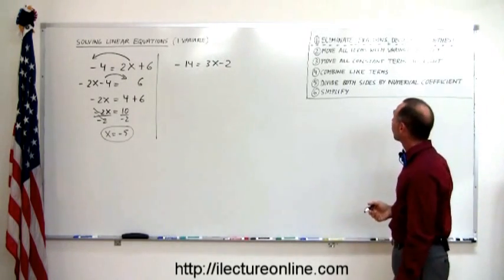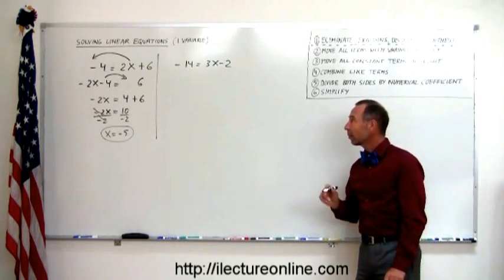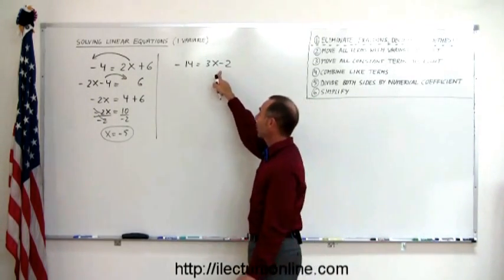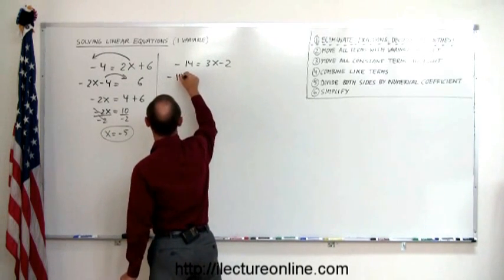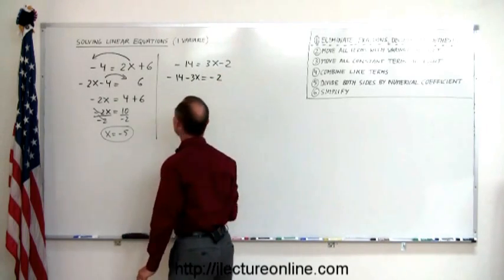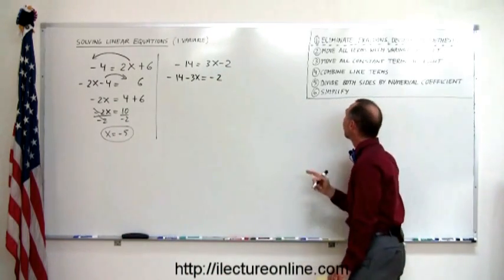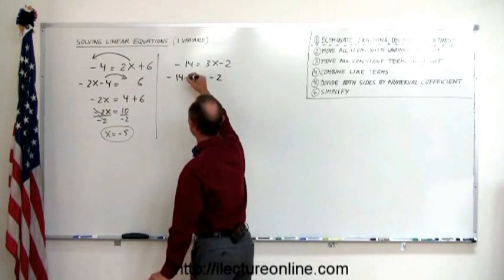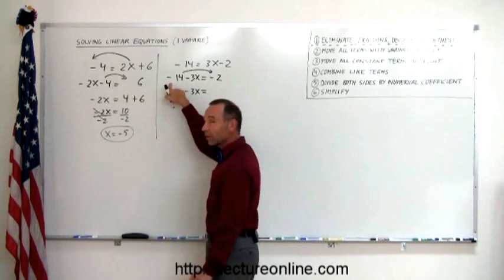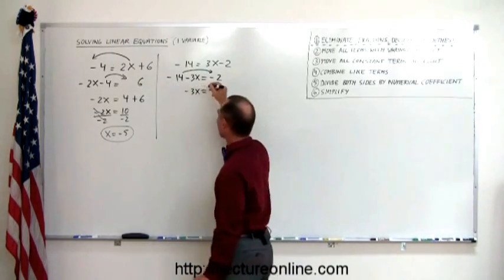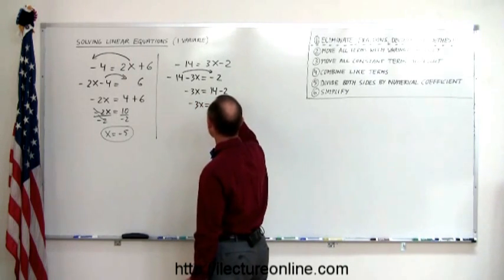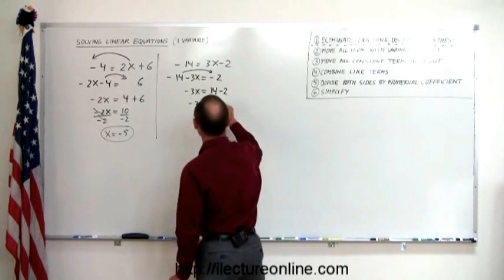There are no parentheses, no fractions, no decimals, so we skip step one. Step two: move all the terms with the variable to the left. 3x is on the right side, so we move it to the left: minus 14 minus 3x equals minus 2. Remember, when we cross the equal sign, the sign changes. Next step: move all the constants to the right. We move minus 14 across — sign changes to positive 14 — giving minus 3x equals 14 minus 2. Combine like terms: that becomes 12, so minus 3x equals 12.